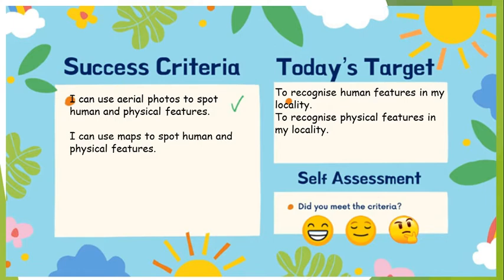And we are also going to be recognising physical features in our locality. Physical features are things that nature has made — so rivers, streams, mountains, hills, big parkland, things like that. What we are going to do to be successful today is use aerial photos and maps to spot human and physical features.